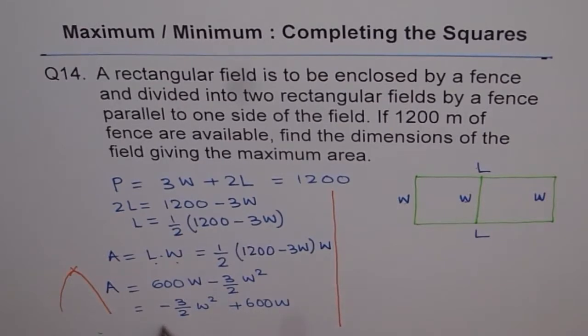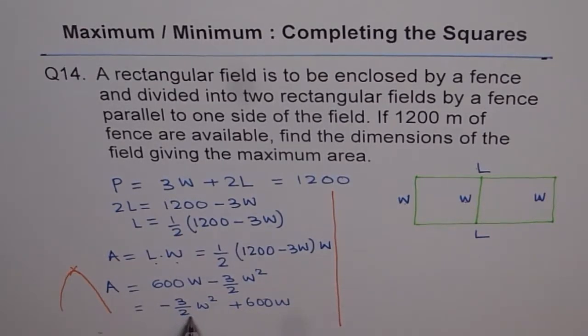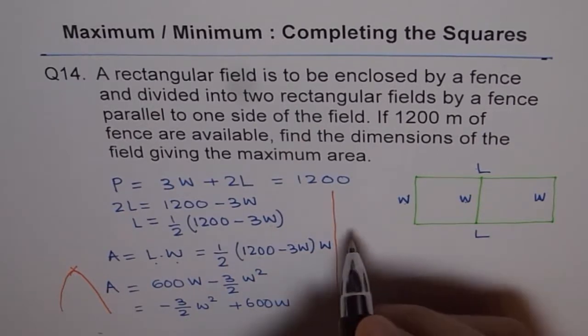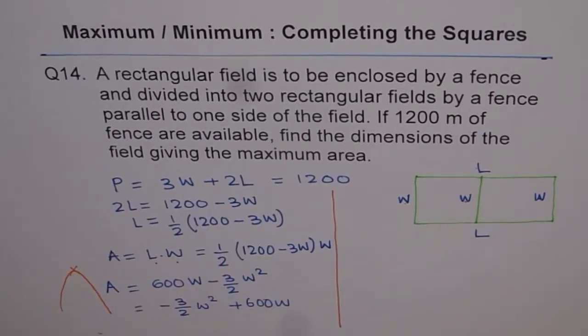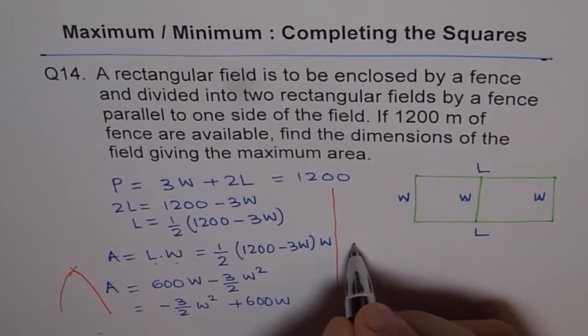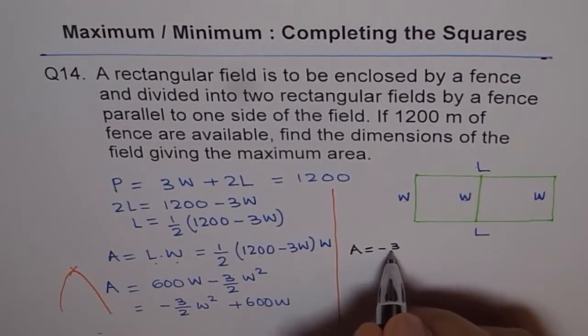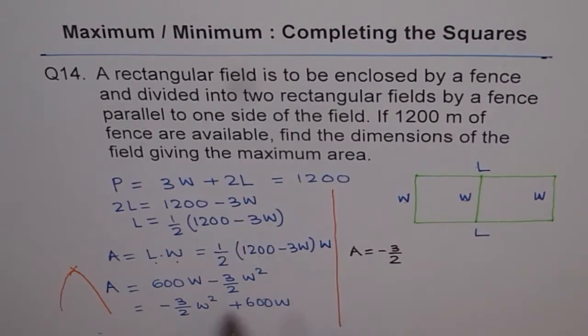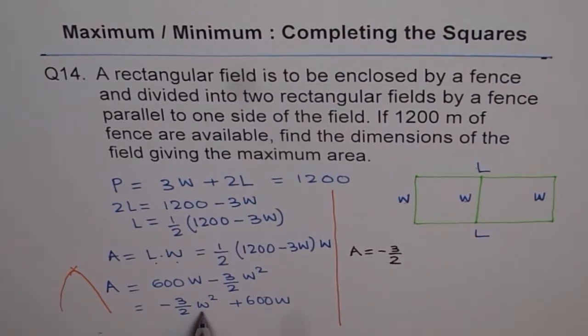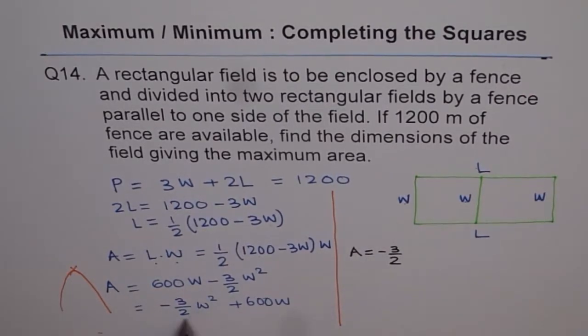So first step in completing the squares is factor out the leading coefficient, right? So we can write A equals minus 3 over 2 is the term which we need to factor, correct? Which is leading coefficient of this equation, W square coefficient, right?